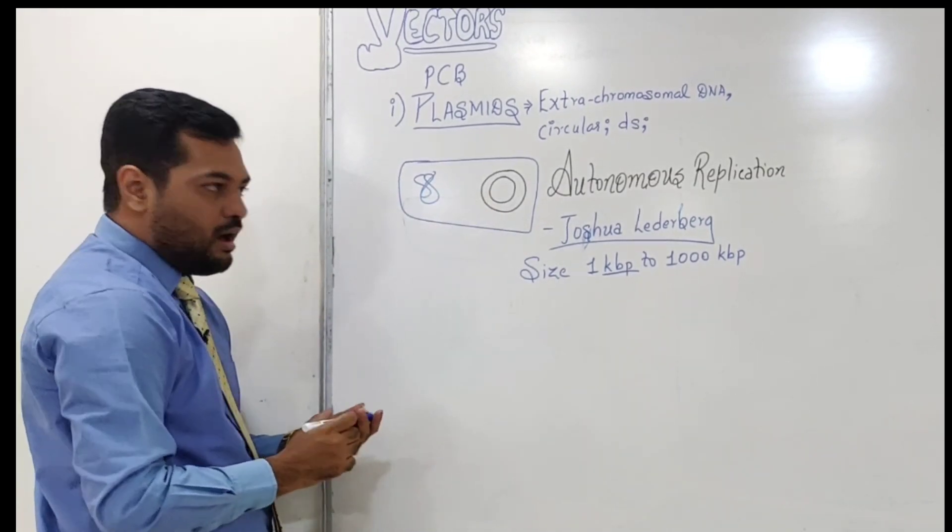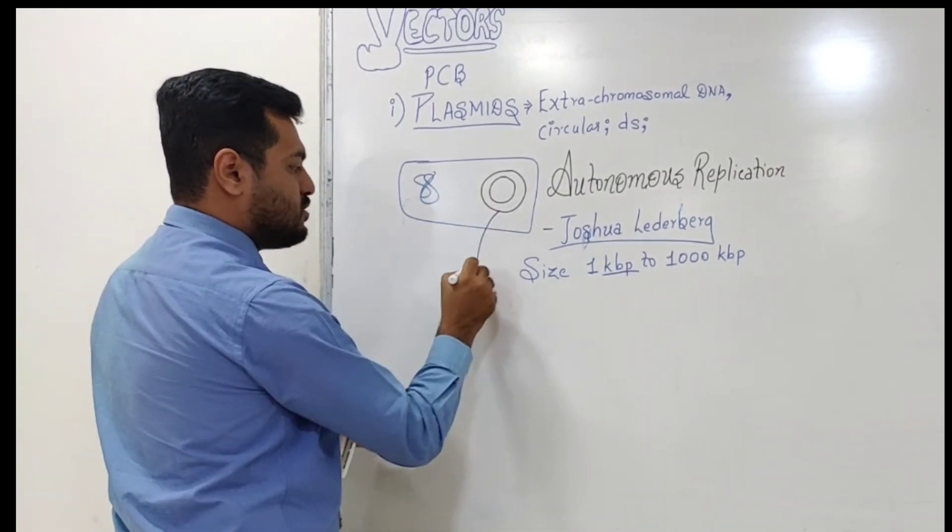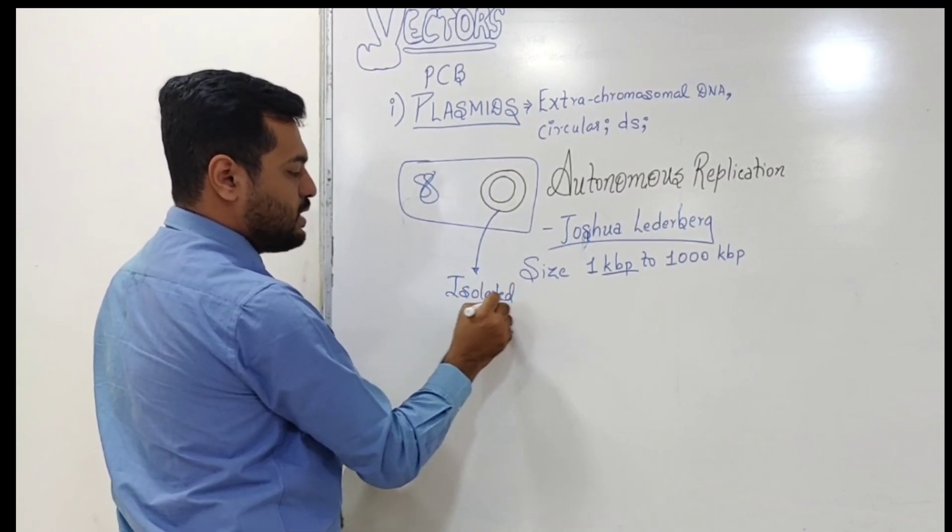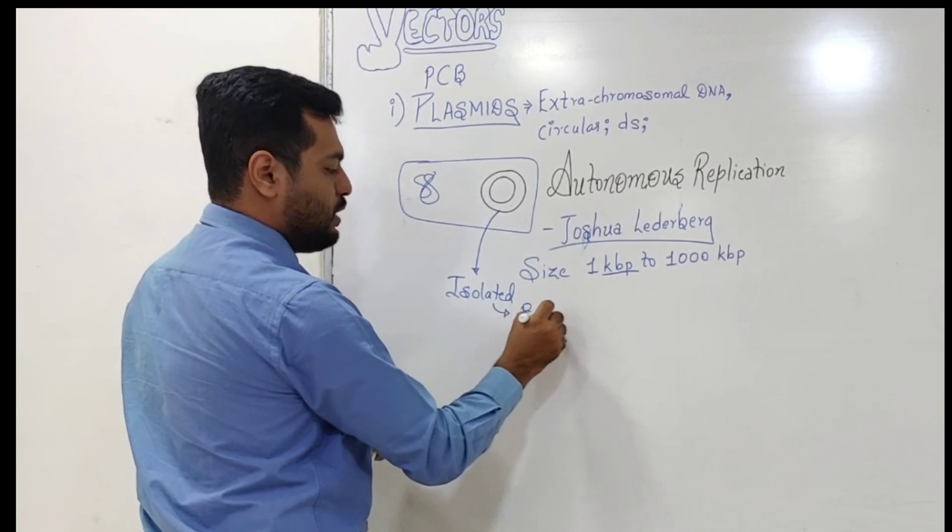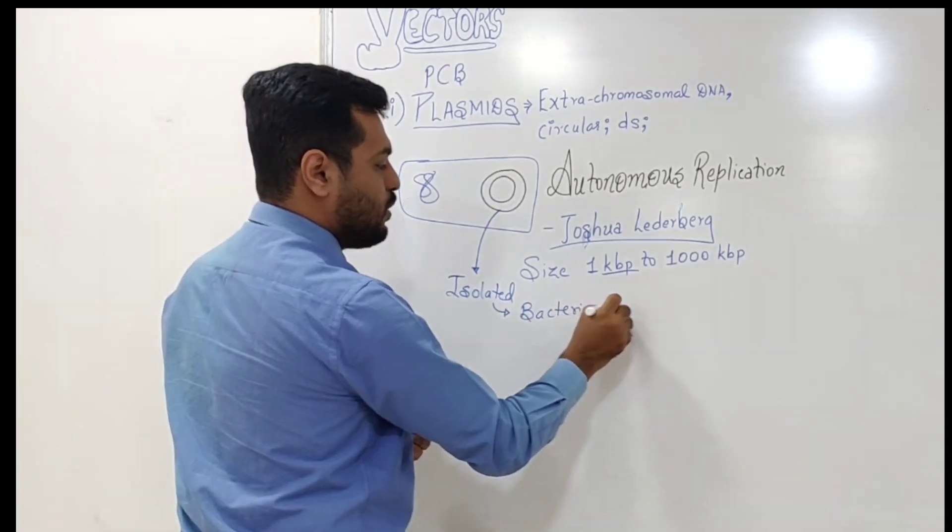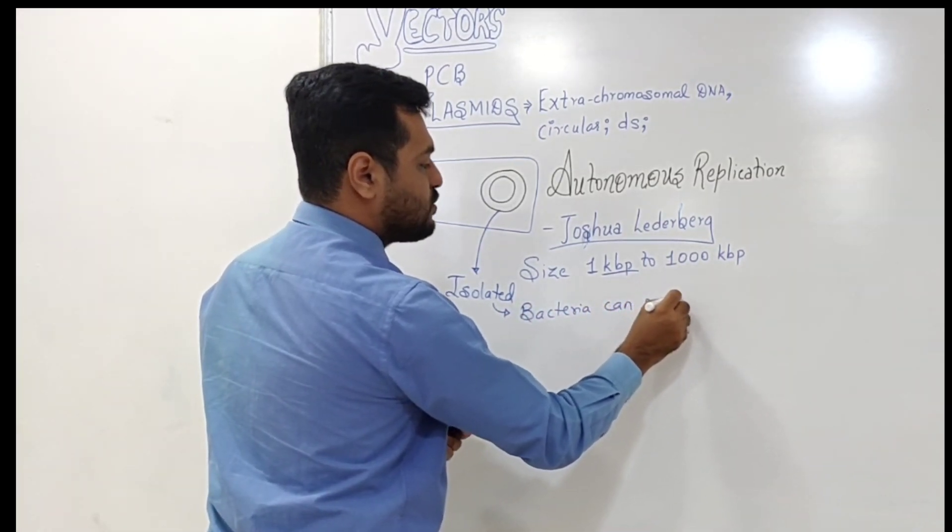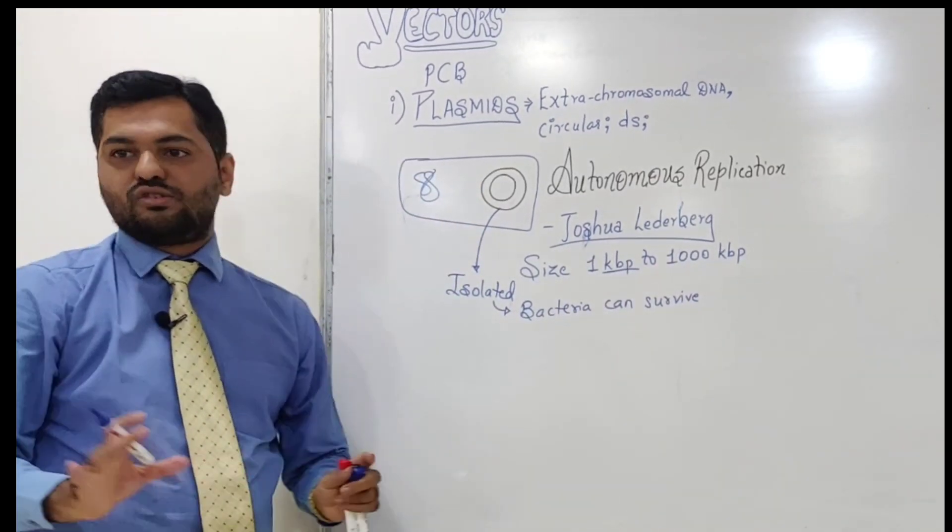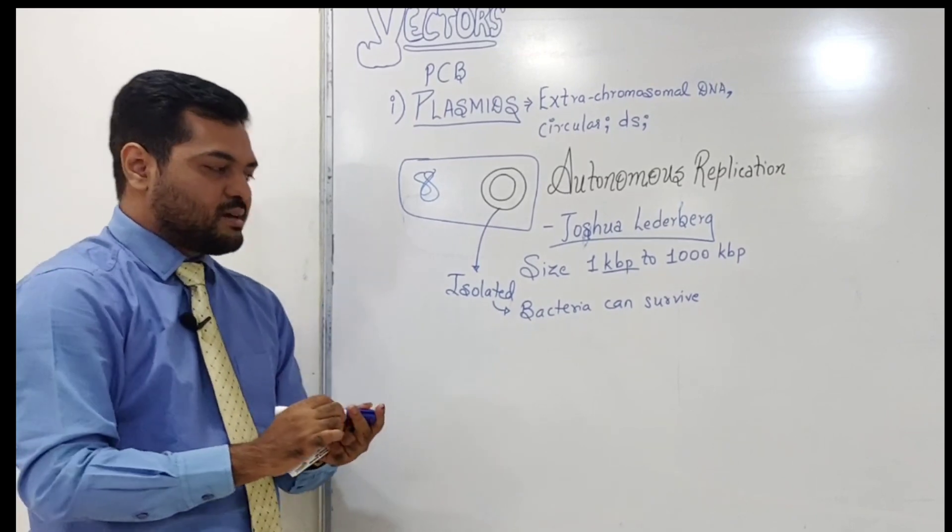If plasmids are isolated from bacteria, even if they are removed, bacteria can survive. This extra DNA is not essential for survival as the main DNA is present.